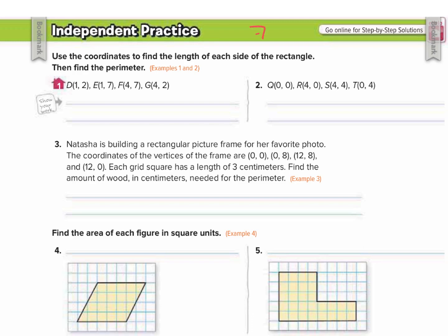We are on workbook page 709. We're going to be talking about polygons in the coordinate plane. For numbers 1 and 2, we want to use the coordinates to find the length of each side of the rectangle, then find the perimeter.